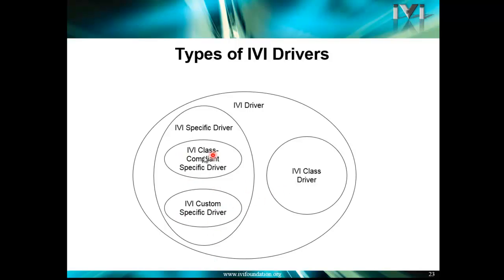Class-compliant-specific means it does implement one of the classes for a specific instrument. Custom-specific means it's an IVI-compliant driver for a specific instrument that doesn't implement a class. And then there's the IVI-class driver — that C driver that acts as a traffic cop. Your program can bind to that, and then it will direct the calls off to whatever driver you've got to actually interact with the instrument.